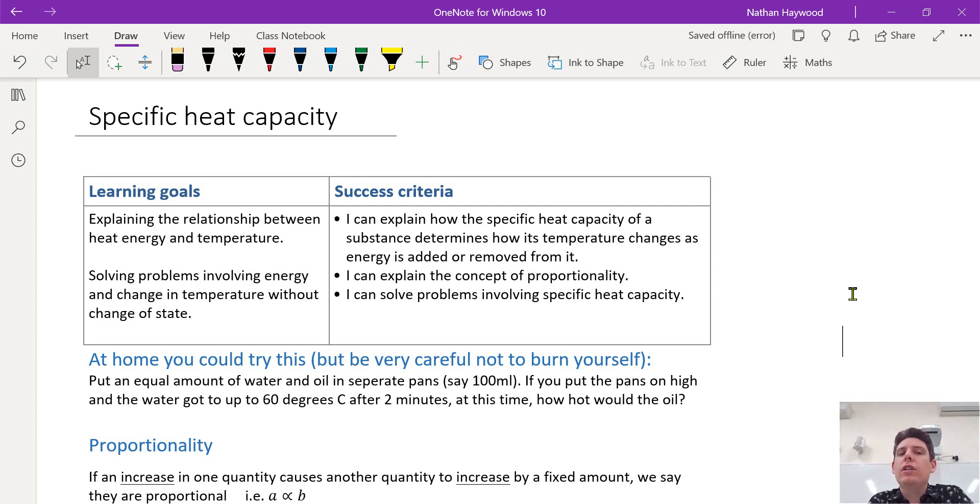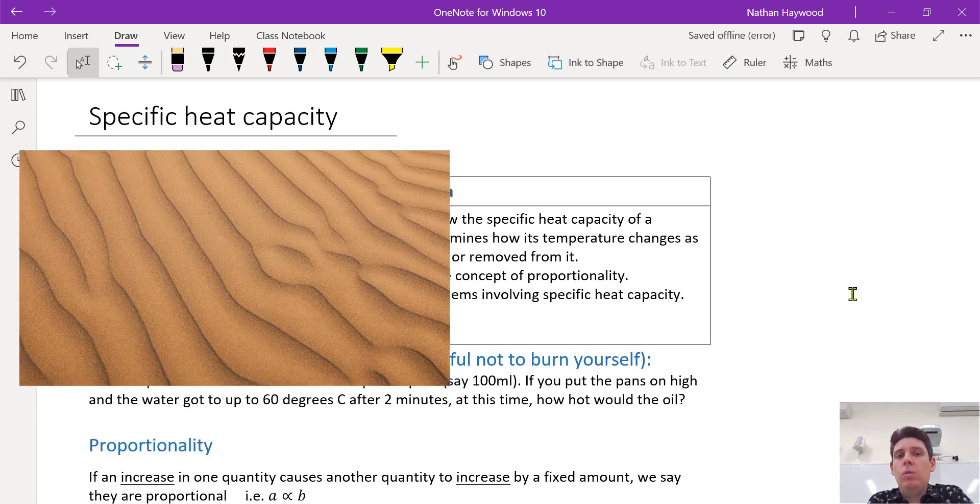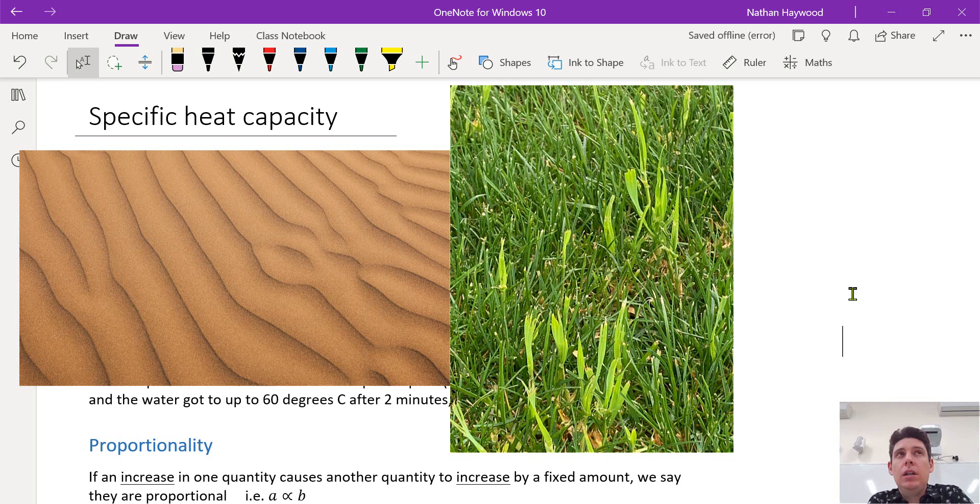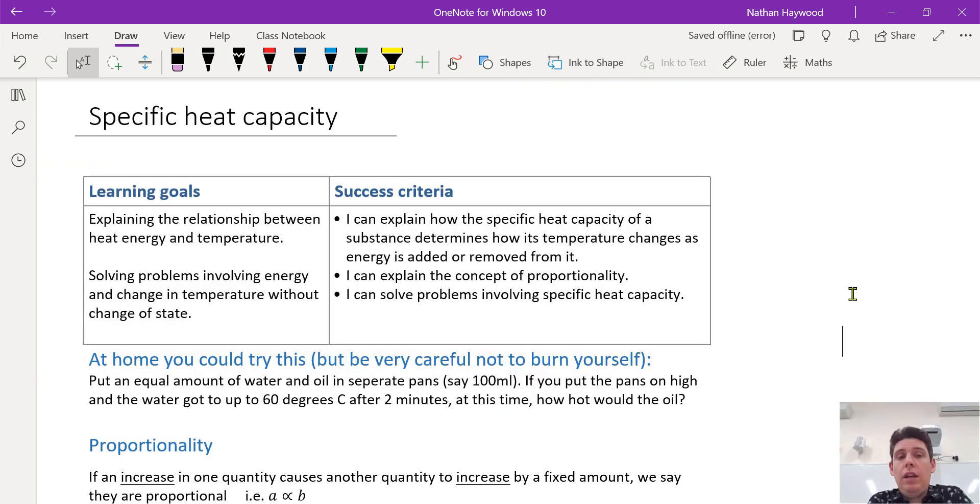So my first question to you, on a hot day when you walk from sand onto grass what happens? The sand seems to be really hot on your feet. The grass isn't. Why is this so? Shouldn't they be the same temperature? This is all to do with heat capacity.